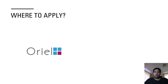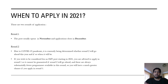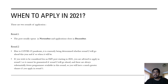Where to apply: Oriel is the place to apply for all kinds of training posts. When to apply: in 2021 there are two rounds of application. Round one usually opens in November and the application window closes in December. There is also a round two, but due to the current COVID-19 pandemic it is currently being determined whether round two will go ahead or not. So if you want to be considered for IMT for 2021, you are advised to apply in round one, as it's not guaranteed whether round two will go ahead.